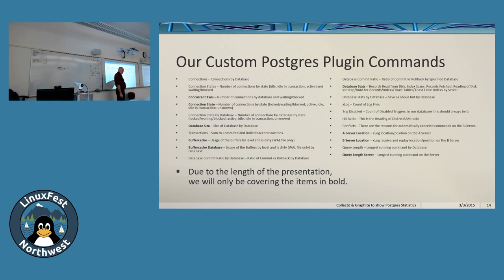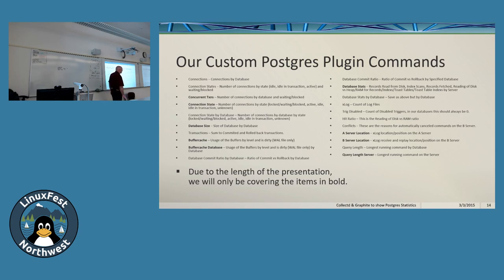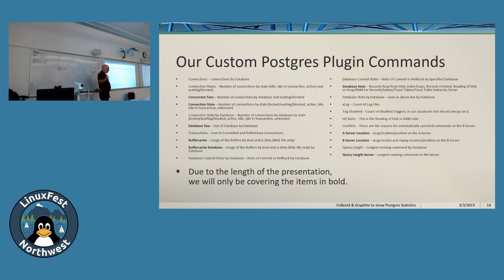We can look at how far the B server is behind the A server in streaming replication — both in time and in bytes. We also monitor how many WAL files are sitting on the server. Because we ship WAL files to a central location, if we take the secondary server offline for more than two hours, we fill up our WAL file space and can't recover without deleting and doing a whole new pg_basebackup, which takes hours.